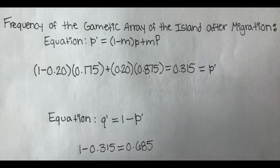Now we need to find the allele frequency of the gametic array on the island after migration. To do this, we use the equation p' equals 1 minus m times p plus m times p. This will give us the frequency of the dominant A allele.